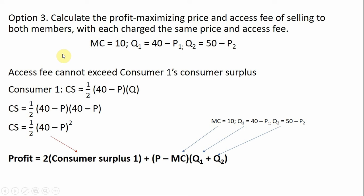Finally, option three: calculate the profit-maximizing price and access fee when selling to both members, each charged the same price and access fee. The access fee cannot exceed consumer one's consumer surplus. Consumer one's consumer surplus can be written as one-half times (40 minus P) times Q₁. Substituting Q₁ = 40 minus P, consumer one's consumer surplus simplifies to one-half times (40 minus P) squared.